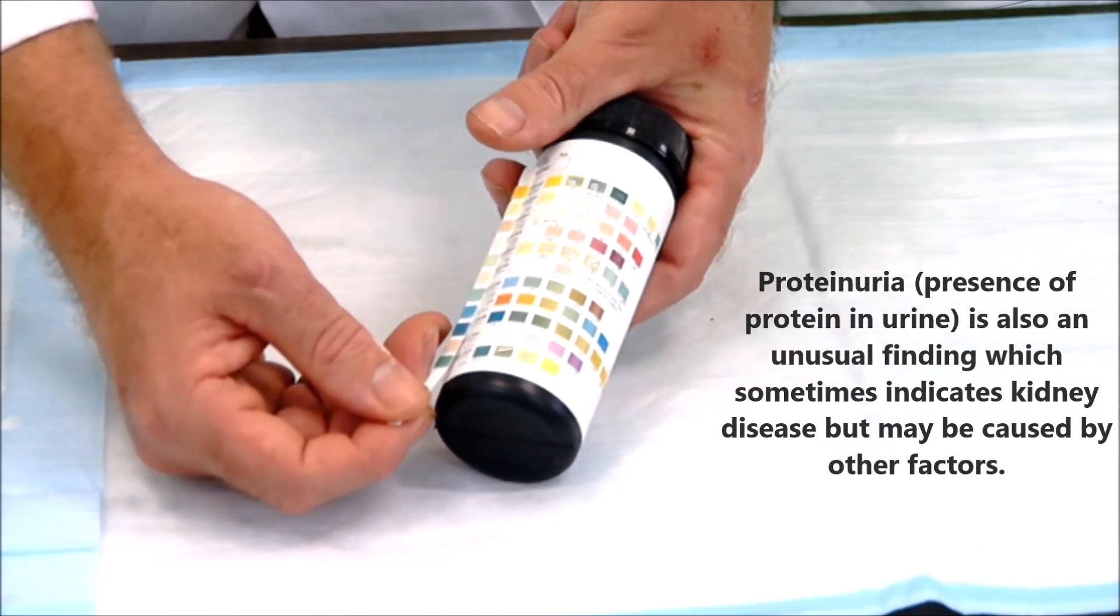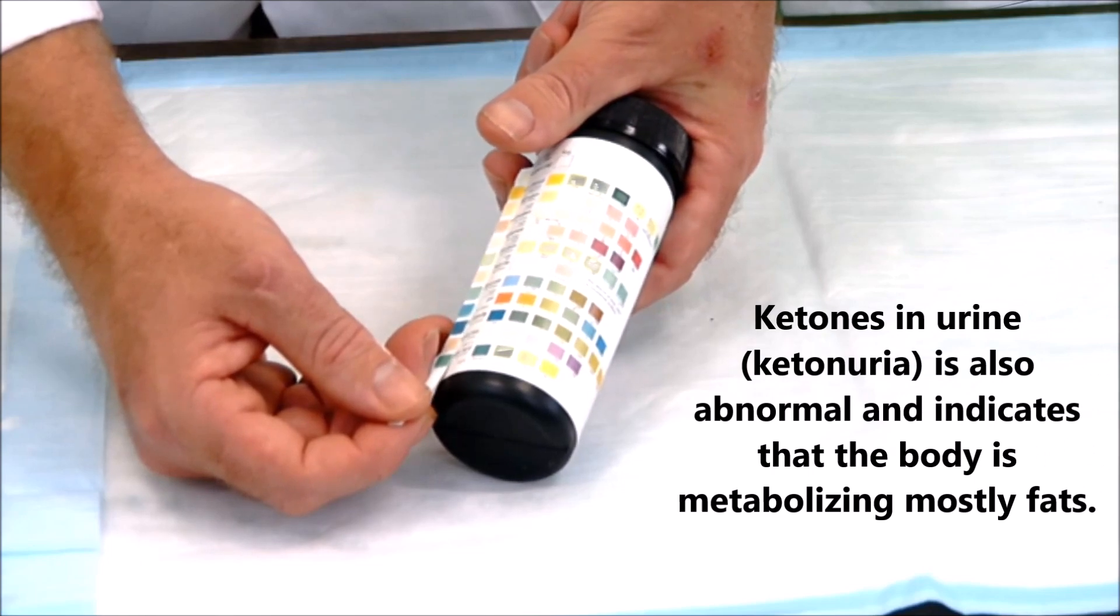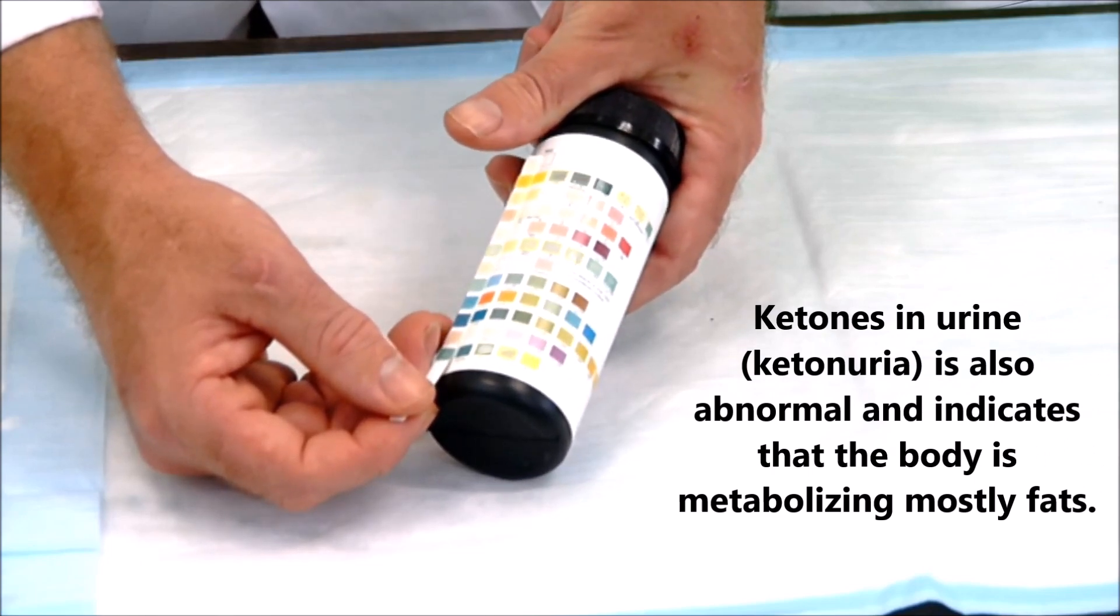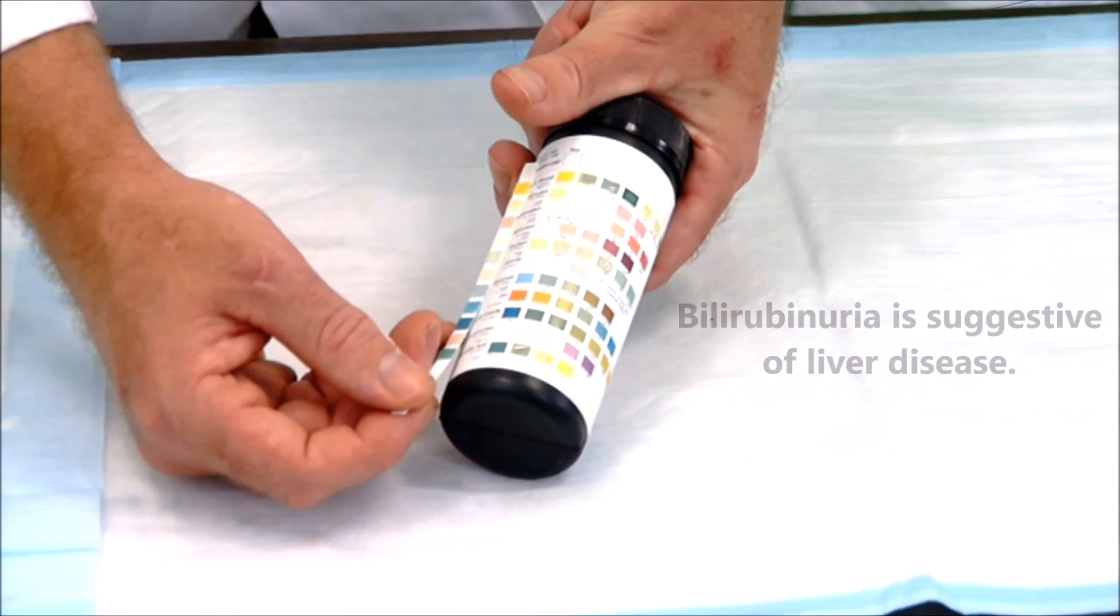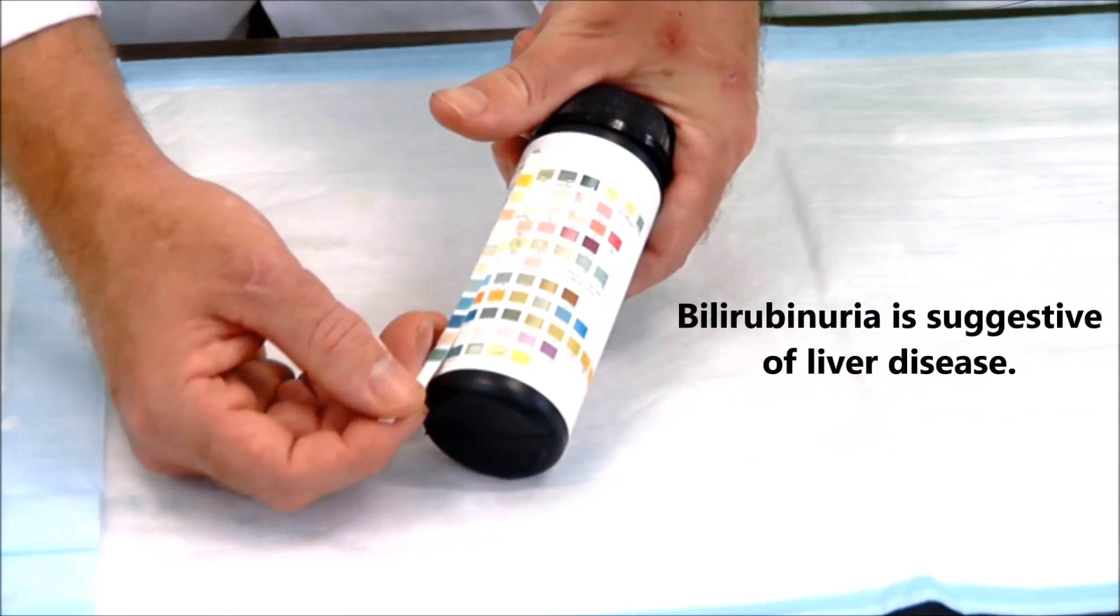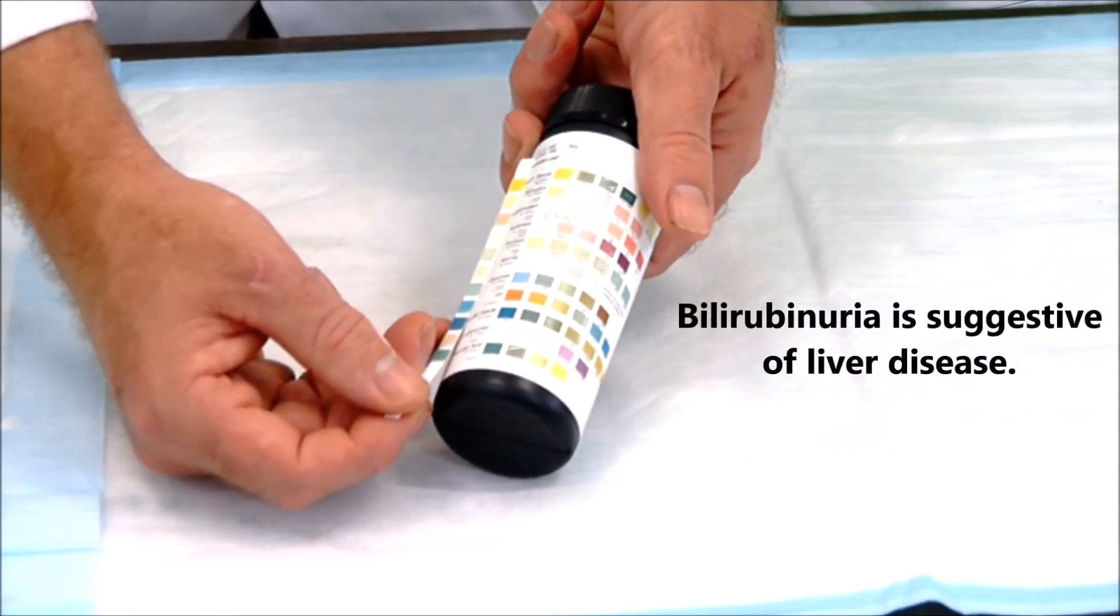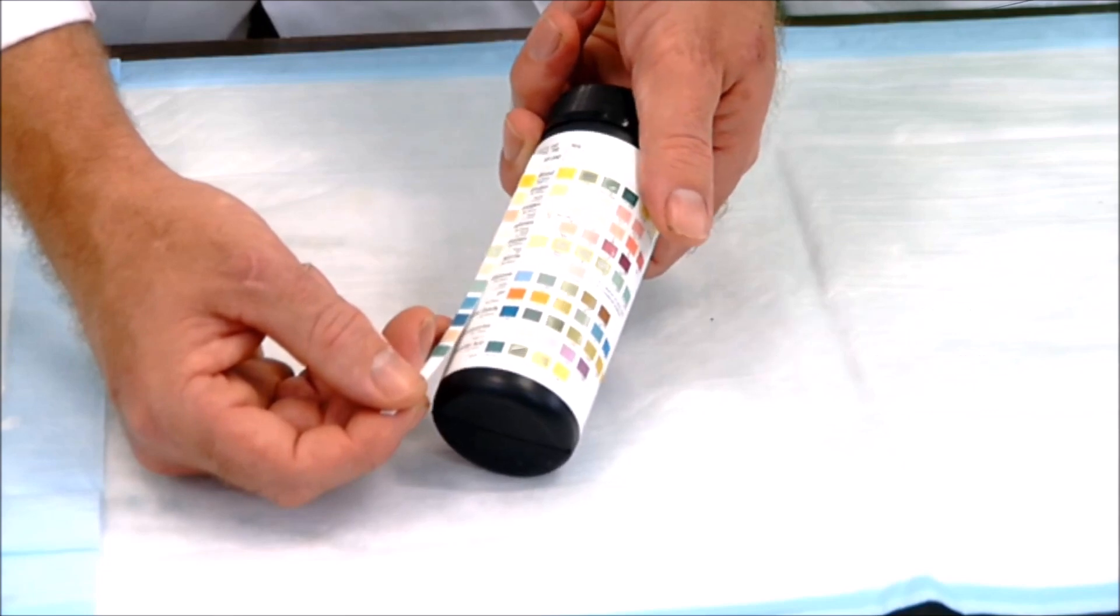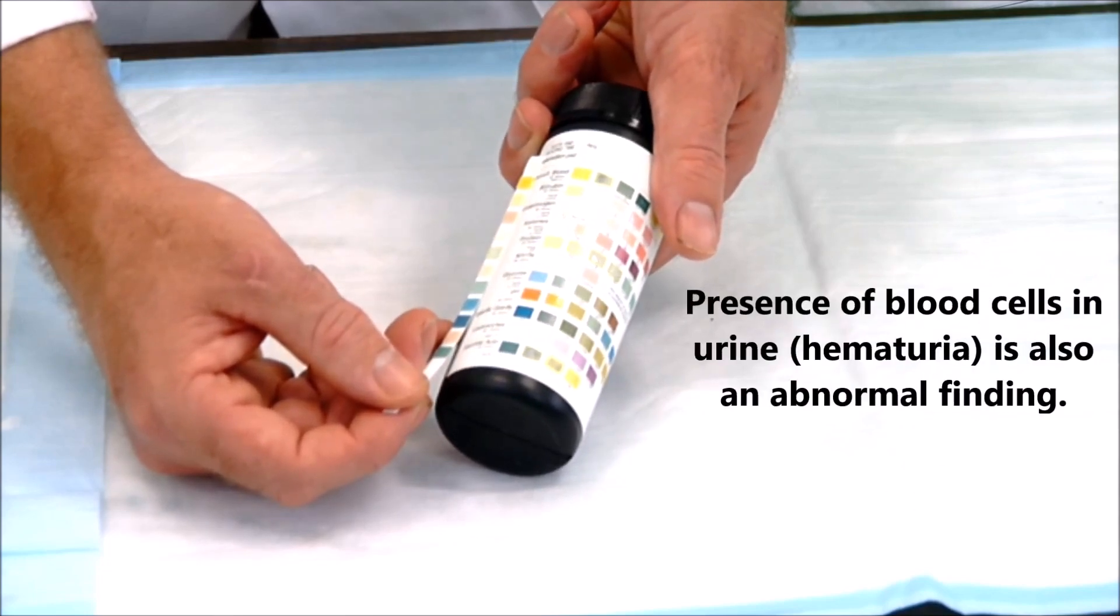And then I'm going to look at ketones. Ketones are produced when we metabolize fats. Here we can see that I have a negative ketone test. Same with bilirubin or urobilogen. Okay, maybe negative to a trace. And then bilirubin up top is negative, and occult blood, which is hidden blood, that's negative as well.